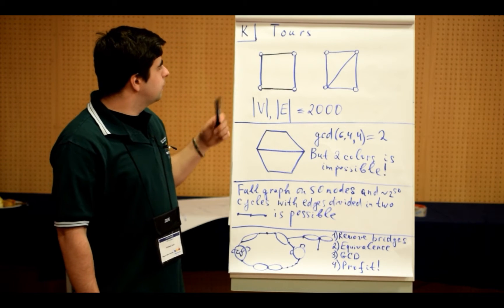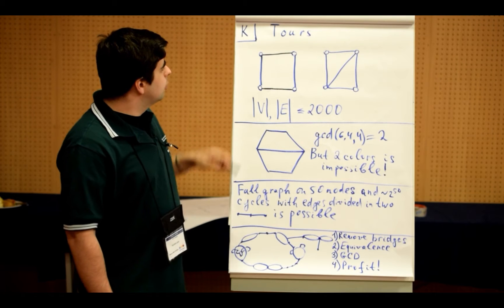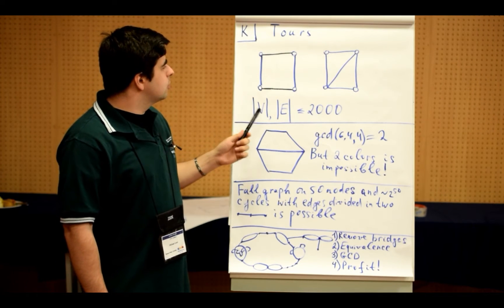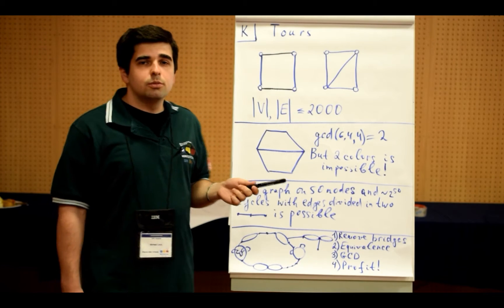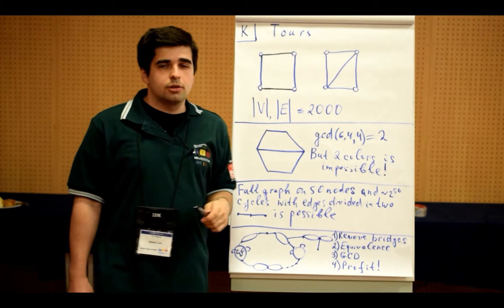To give you an example of what can be the solution here, for this graph with four nodes and four edges, we have three different answers. One answer, which is always possible, is one color. We just color all edges in the same color, and it is a correct solution.